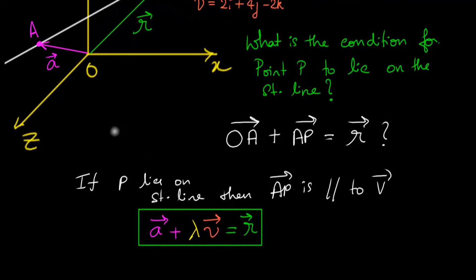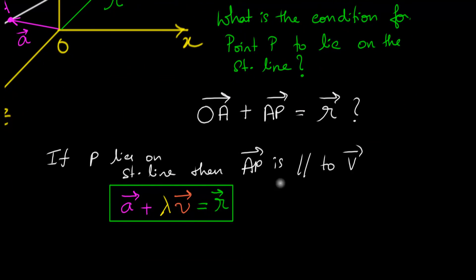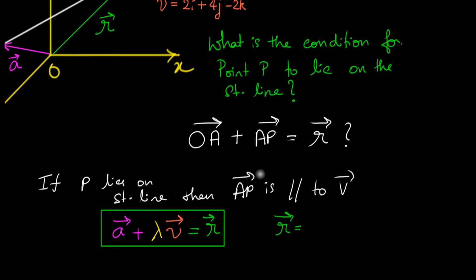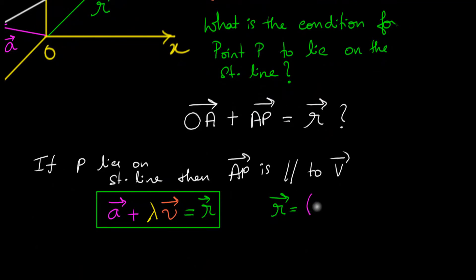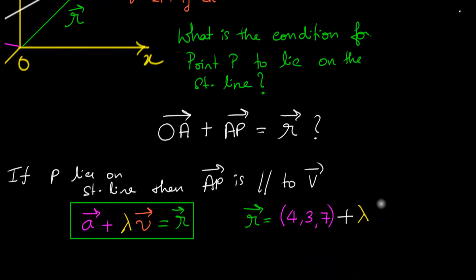This is the condition for R to be the position vector of a point lying on the straight line. We can now substitute our values. Our vector R equals A, which is (4, 3, 7), plus λ times V, which is the direction ratio (2, 4, −2). So R = (4, 3, 7) + λ(2, 4, −2). That's the answer — the vector equation of our straight line.